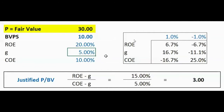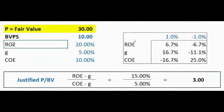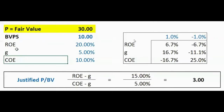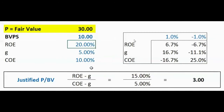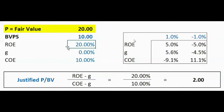Why are we willing to pay a higher price-to-book multiple? It's simple: the bank is growing and generating an ROE of 20%, which is higher than the cost of equity of 10%. As long as you're making a return higher than the cost of equity, you're willing to pay more.